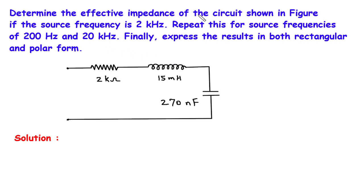Determine the effective impedance of the circuit shown in the figure. If the source frequency is 2 kHz, repeat this for source frequencies of 200 Hz and 20 kHz. Finally, express the results in both rectangular and polar form.